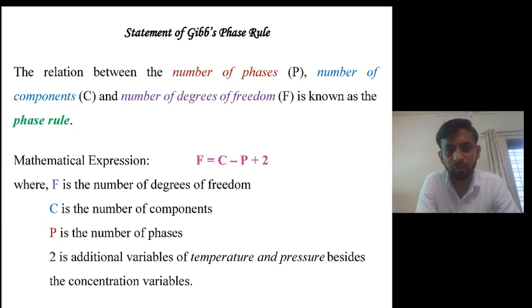The relation between number of phases P, number of components C and number of degrees of freedom F is known as the phase rule. Mathematically it is expressed as F = C - P + 2, where F is the number of degrees of freedom, C is the number of components and P is the number of phases. Remember, the 2 is the additional variables: one for temperature and one for pressure.